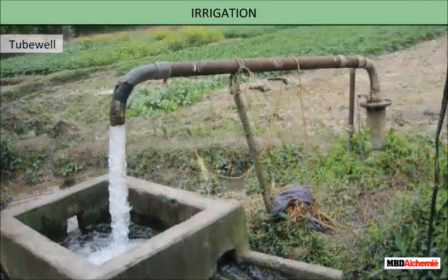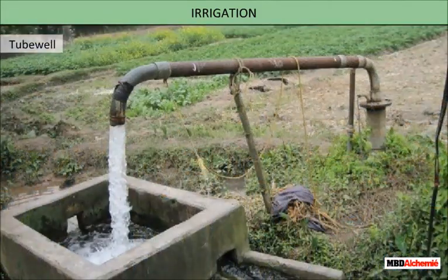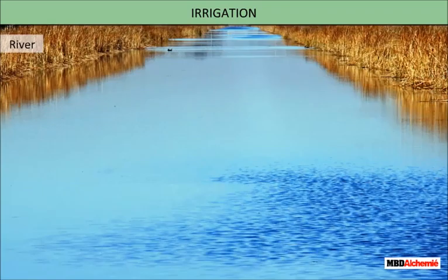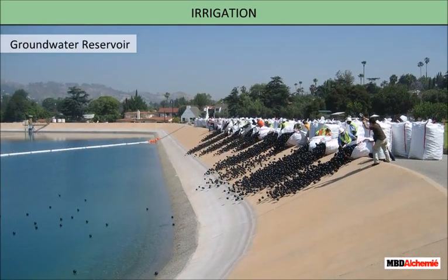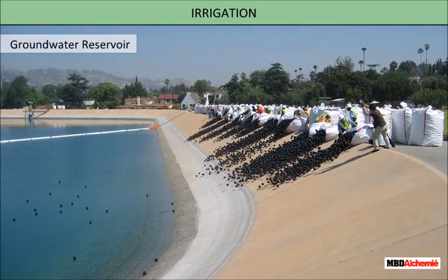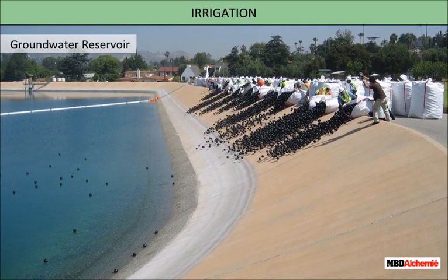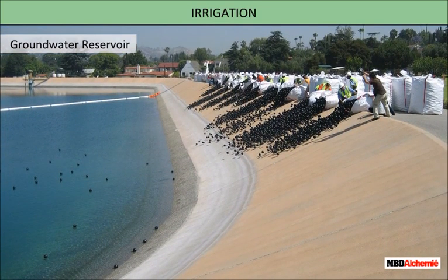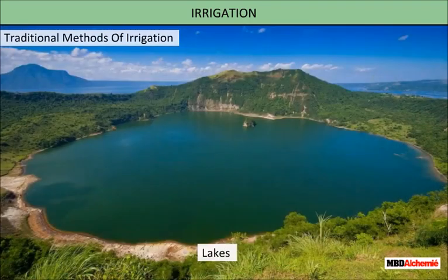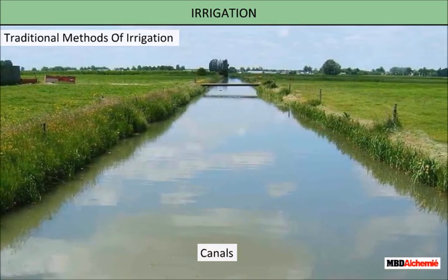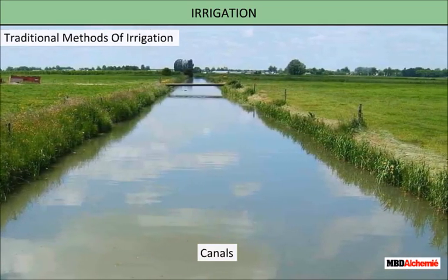Water supply to the fields through sources other than rain is called irrigation. The main sources of water for irrigation projects are tube wells, rivers, wells, etc. Groundwater reservoirs are also used for irrigating the fields.